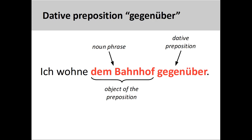The last preposition we will look at in this video is 'Gegenüber,' as in 'Ich wohne dem Bahnhof gegenüber' — I live across from the train station. It is important to note that the placement of this preposition is unusual: it comes after the dative object instead of before it, like the other prepositions we have examined thus far.